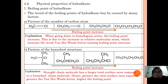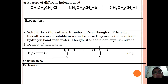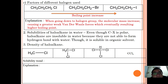A third factor is the type of halogen used. Comparing chloropropane, bromopropane, and iodopropane, boiling point increases down the halogen group because molecular mass increases, causing greater van der Waals forces and therefore a higher boiling point.